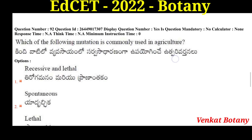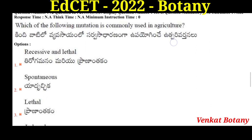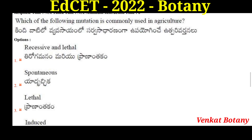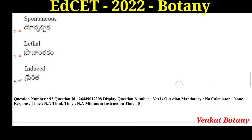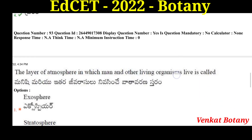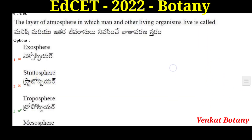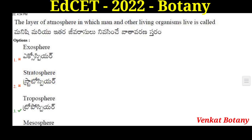Which of the following mutation is commonly used in agriculture? The answer is induced mutations. The layer of atmosphere in which man and other living organisms live is called the troposphere.